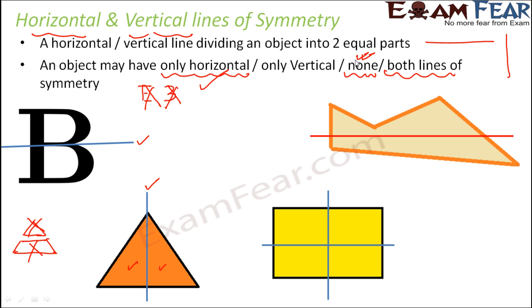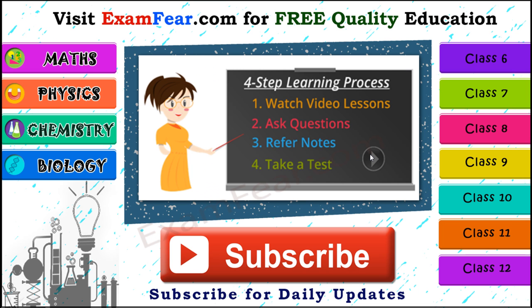So in this fashion, we see that certain objects have horizontal lines along which when you fold the paper, the object gets divided into two equal halves which cover each other completely. Whereas some other objects have vertical lines of symmetry, some have both while some have none.